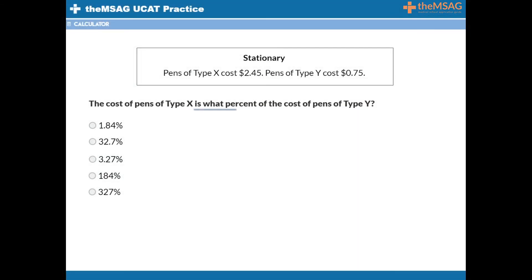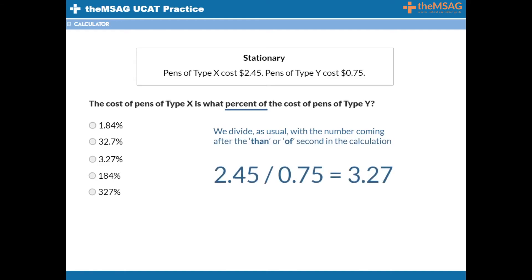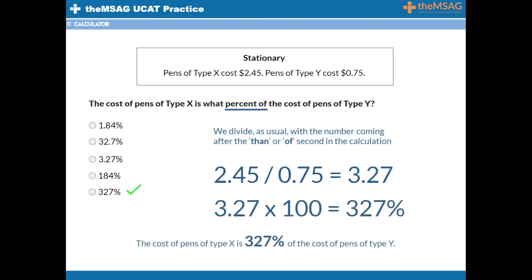This is a 'percent of' question. We divide as usual, with the number coming after 'than' or 'of' second in the calculation. 2.45 divided by 0.75 gives 3.27 to two decimal places. Therefore, the cost of pens of type X is 327 percent of the cost of pens of type Y.